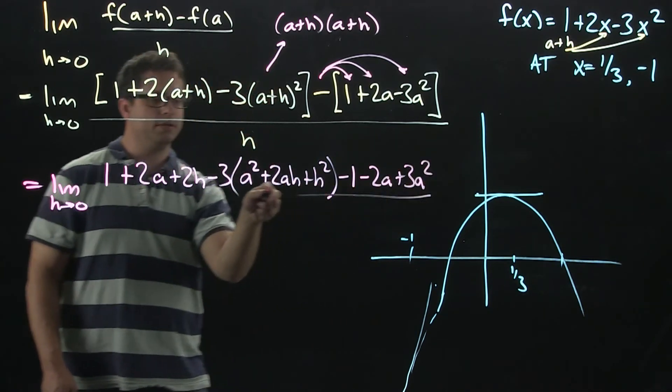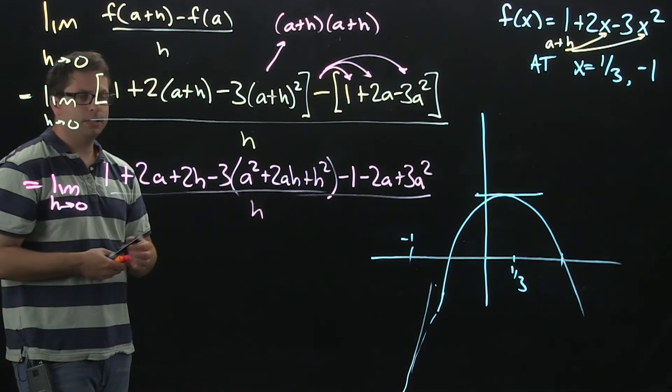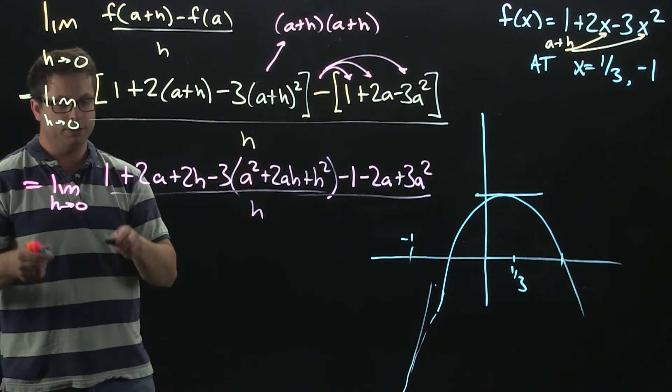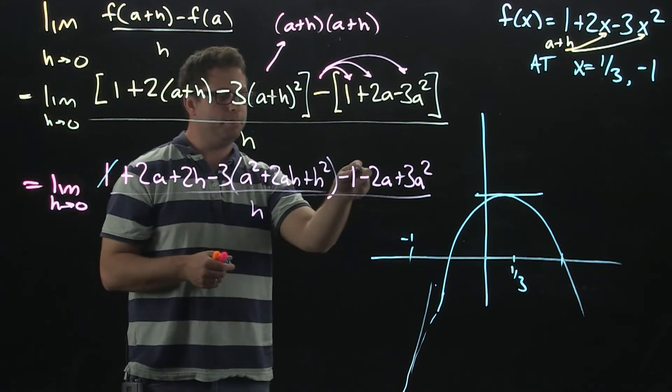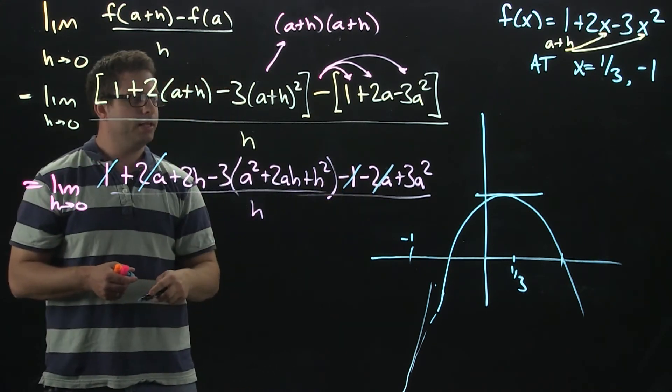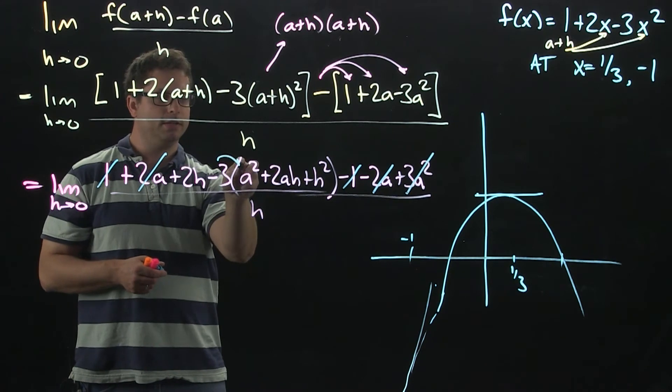That'll give me minus 1 minus 2a plus 3a squared. All over h. Let's go ahead and collect like terms or see if anything cancels. We do have a plus 1 and a minus 1, a 2a and a minus 2a. This positive 3a squared actually is right here. So, those cancel.